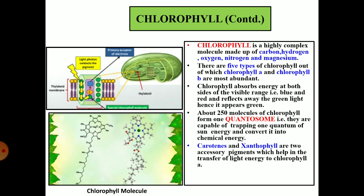About 250 molecules of chlorophyll form one quantosome. A quantosome is 250 molecules of chlorophyll which are capable of trapping one quantum of solar energy and converting it into chemical energy. This process is also known as the photochemical act. Together with chlorophyll there are two more pigments — carotene and xanthophyll — known as the accessory pigments. They help in the transfer of light energy to chlorophyll A.